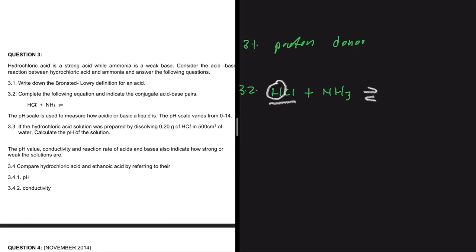If the acid donates a proton, we're going to be left with only Cl⁻. And then if the base accepts a proton, we're going to have NH4⁺. So that is what we're talking about when we say that an acid is the proton donor and base is a proton acceptor.